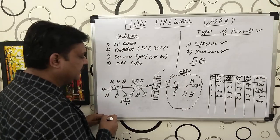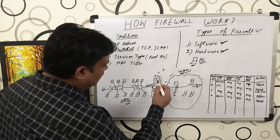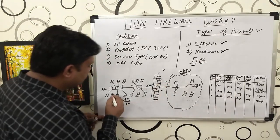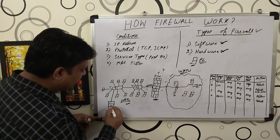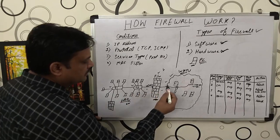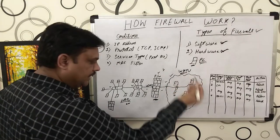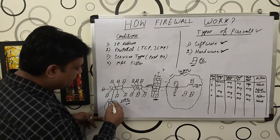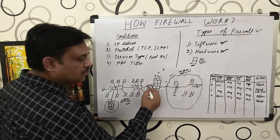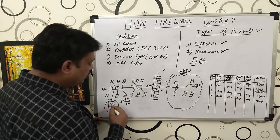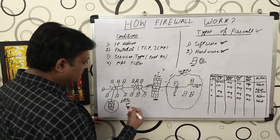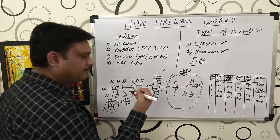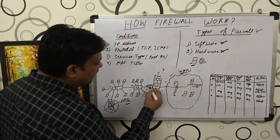The location of the firewall is always between the local area network and the wide area network. You cannot put the firewall inside the local area network, because if the data coming from the internet terminates directly to your switch, the firewall will not be able to inspect those packets — whether to allow them into your network or not. That's the reason the correct location for placing the firewall is where the local area network connects to the wide area network.